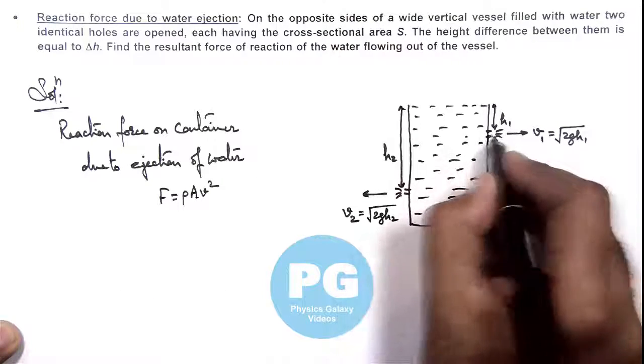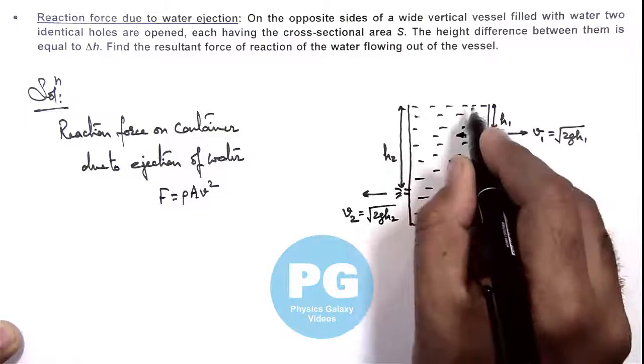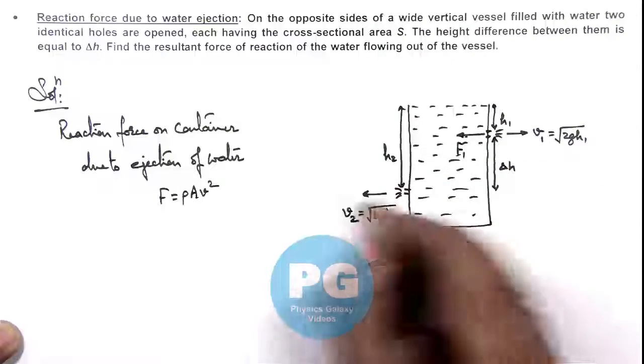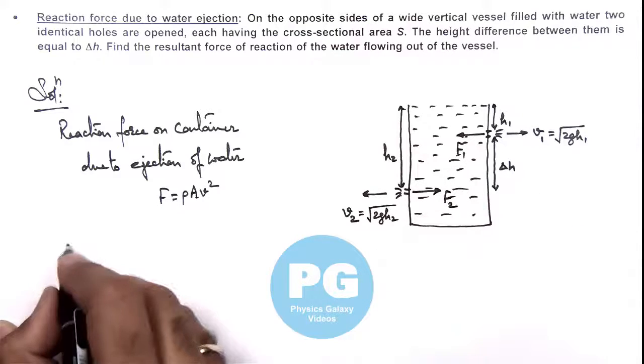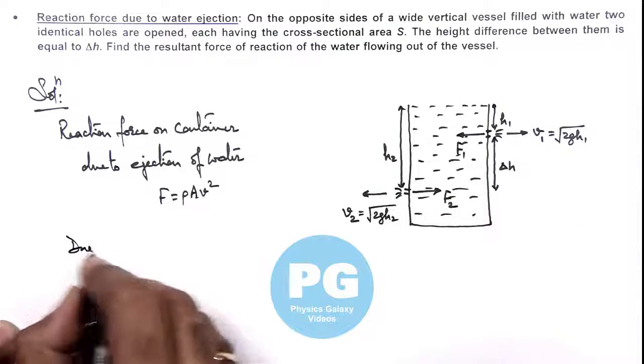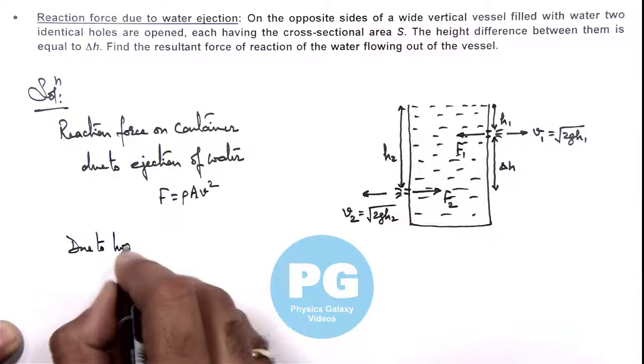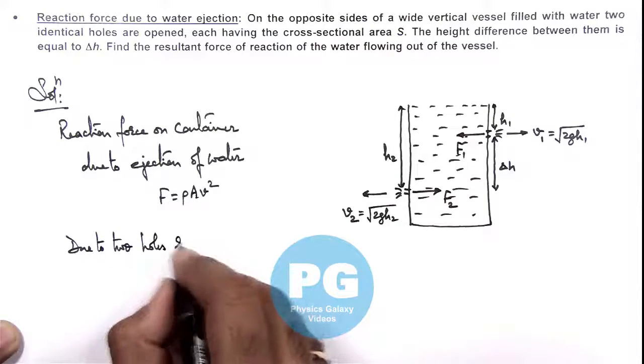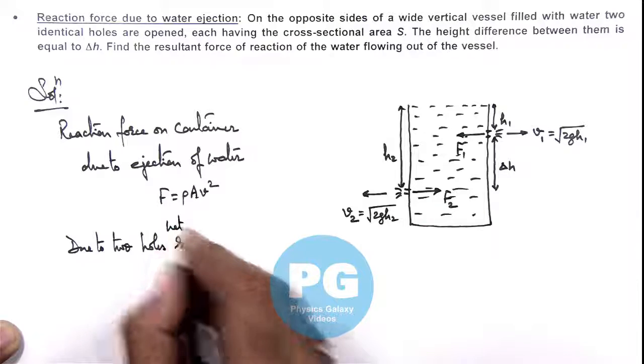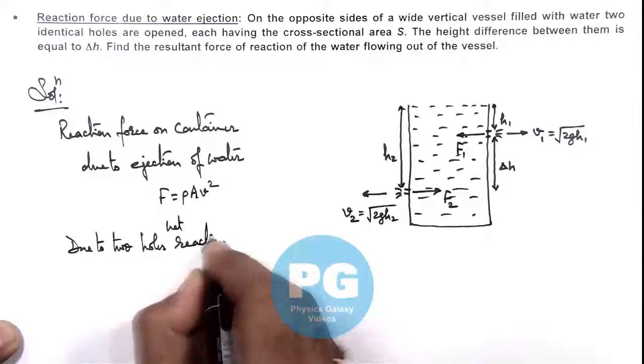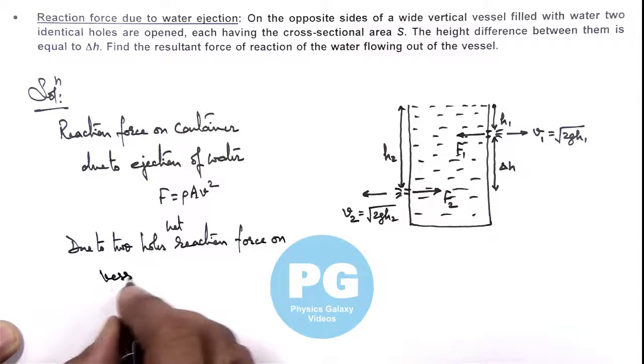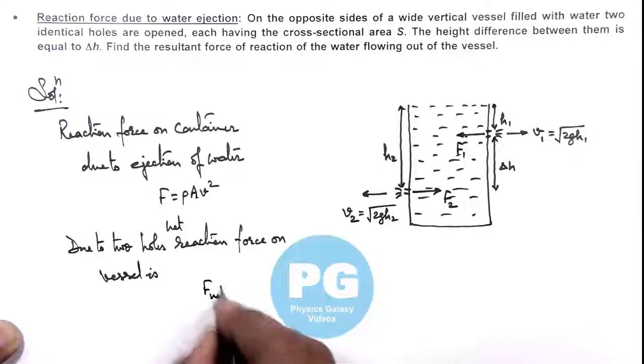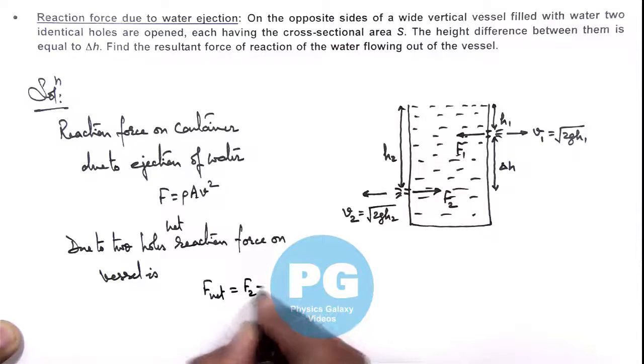So due to this ejection the reaction on container is f1. Due to this ejection container reaction is f2, which are in opposite direction. So we can write due to two holes, a net reaction force on vessel is, this net force we can write as f2 minus f1.